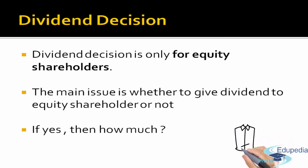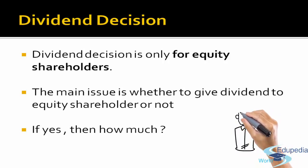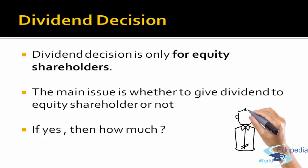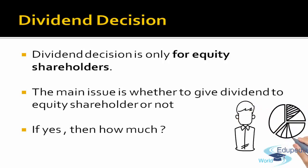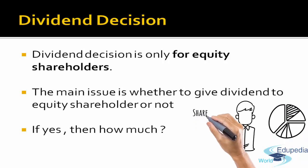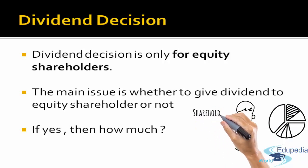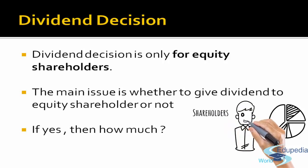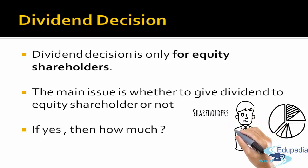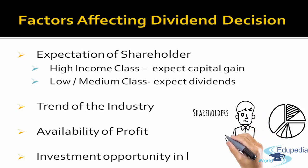Why are we taking this decision? Because this is one of the important long-term sources of finance for the company. In case the surplus of a business is not distributed as dividend, it is retained into the business. That retained amount is one of the biggest and the cheapest sources of finance for a company. That's why Dividend Decision is very critical.